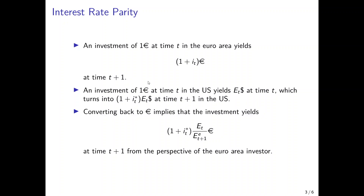If the investor is located in the Euro area, then an investment of one Euro at time t would yield one plus the interest rate in the Euro area times the amount invested, at time t plus one.